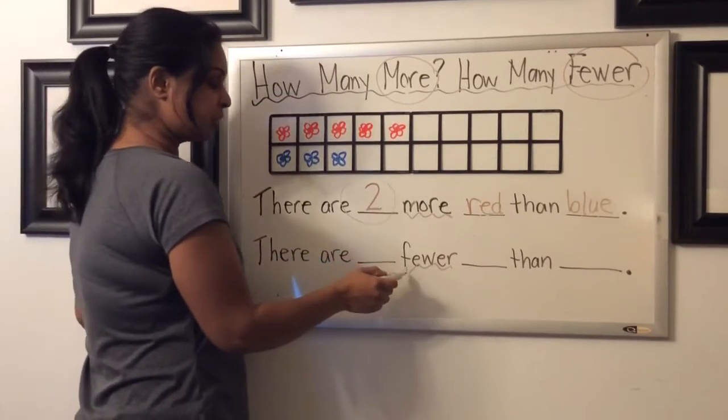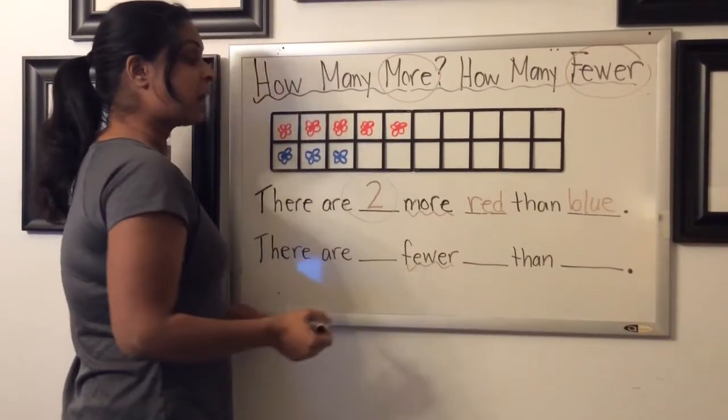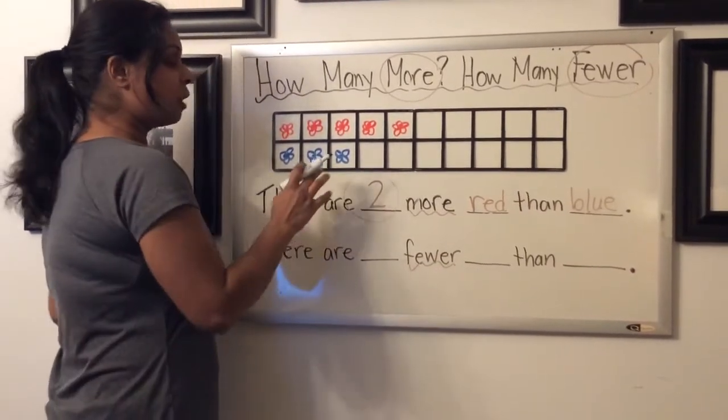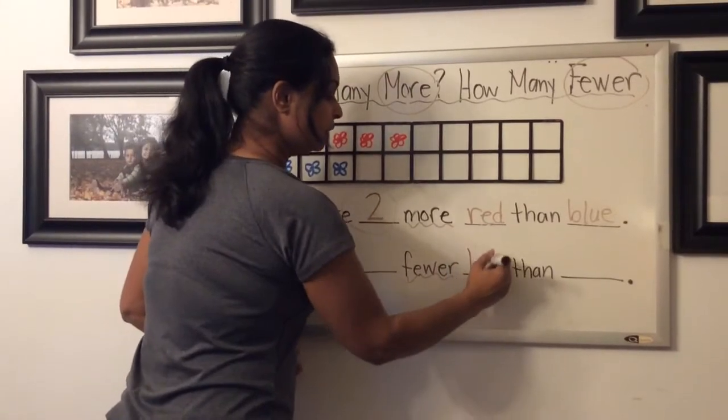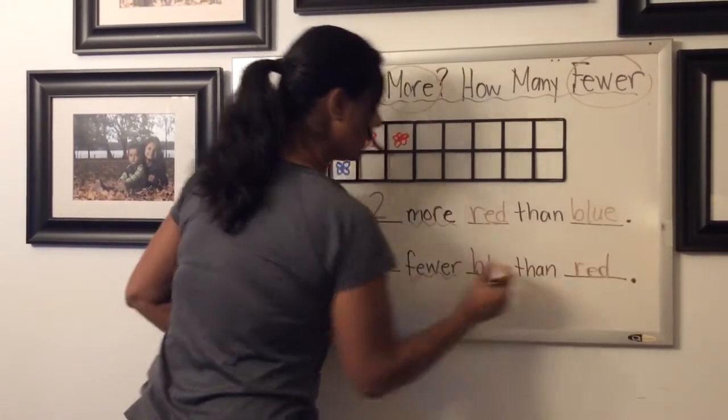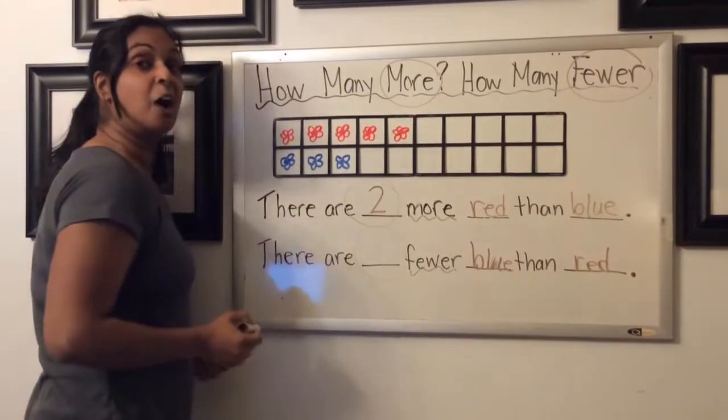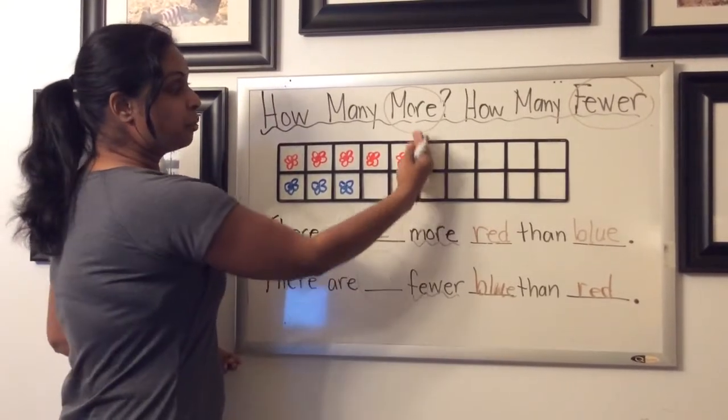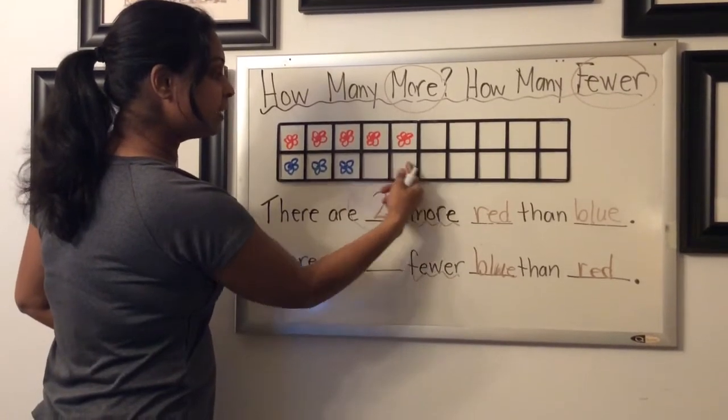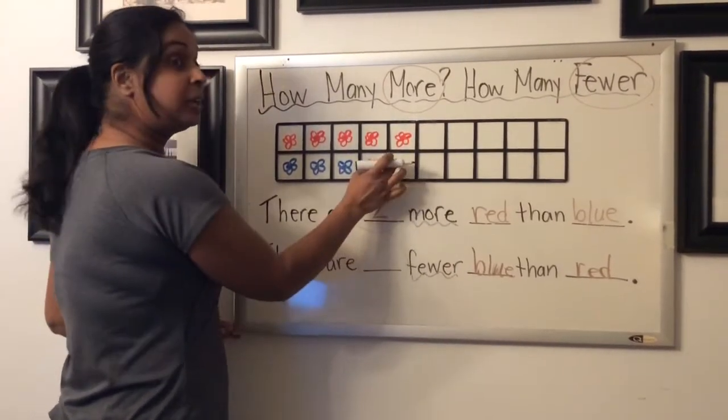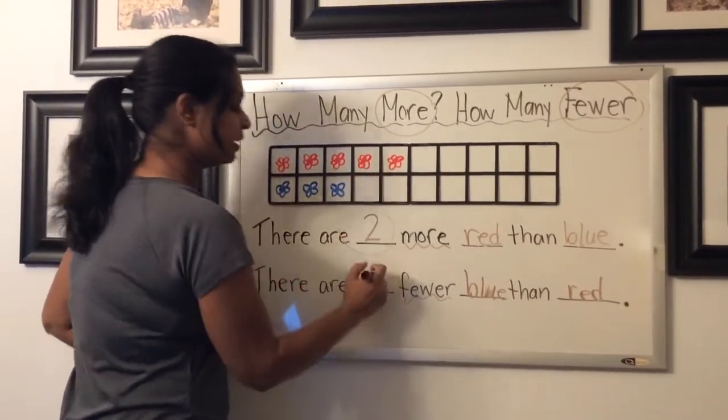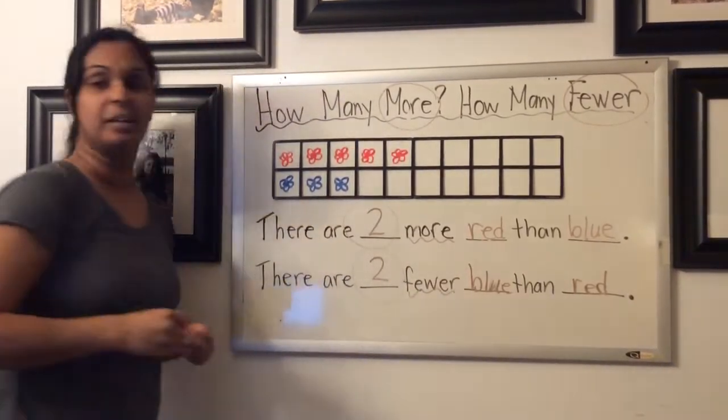Now, moving on to my next question that uses the word fewer. So now I'm looking to see which one has fewer. Fewer means less. So I know that it's going to be blue. So there's fewer blue than red. And this space here is for how many fewer. So red comes to here, that one has more. And then fewer is here as well. So these empty spots are really your key to answering how many more, how many fewer. So we can see that there are two fewer blue than red.